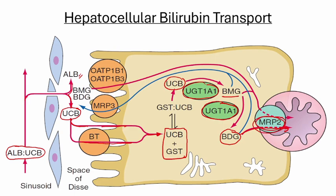There is another pathway in which bilirubin diglucuronide and bilirubin monoglucuronide are transported back into the sinusoidal space. The important transporter to remember here is MRP3, because defects in this transporter lead to Rotor syndrome. The basic mechanism is that unconjugated bilirubin is converted to conjugated bilirubin and transported to the bile canaliculi through the MRP2 transporter.